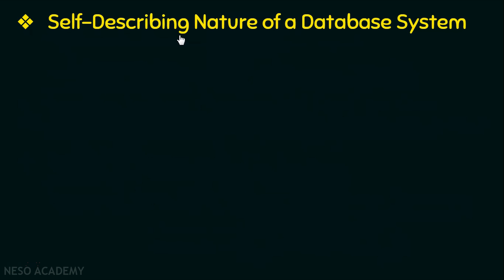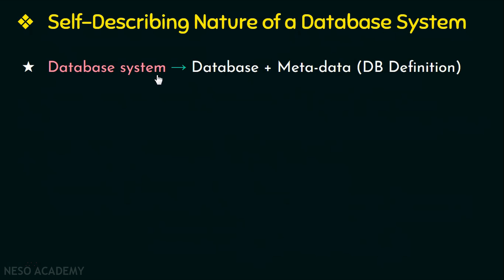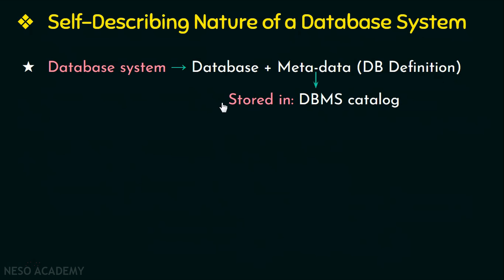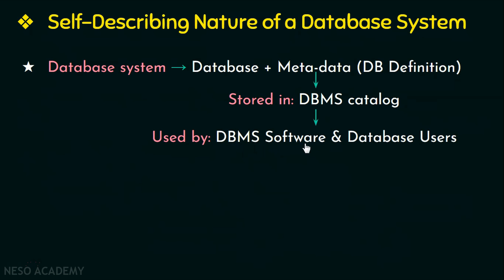The first characteristic is the self-describing nature of a database system. A database system not only consists of a database but also contains metadata. We have already seen what metadata is in the previous video — it is nothing but the database definition or a complete description of the database. Information like the data type and the constraints are what we call metadata, and this information is stored in the DBMS catalog. This catalog is used by the DBMS software as well as by database users who want to know the structure of the database.